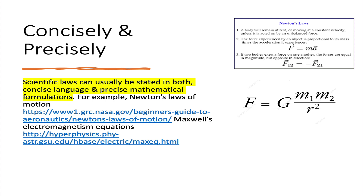Scientific laws can usually be stated in both concise language and precise mathematical formulations. For example, Newton's laws of motion — there are three laws of motion and one law of gravity, for a total of four laws of Newton. If you're watching this video, you can see the formulas and verbal formulations for those laws. The power of scientific laws is their conciseness, both in mathematical expressions and in natural languages such as English.